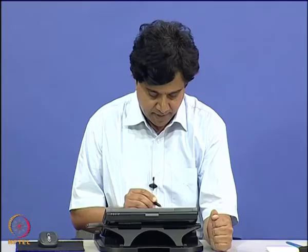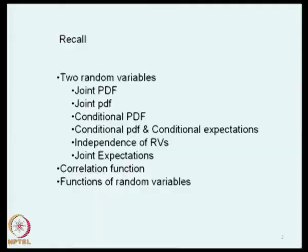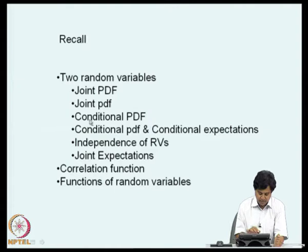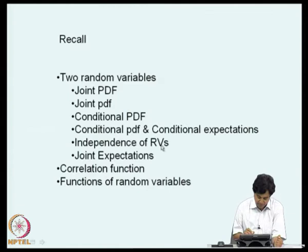In this lecture, we will continue with discussion on two-dimensional random variables. Before that, we will quickly recall what was discussed in the last lecture. We discussed the description of two random variables in terms of their joint probability distribution function and joint probability density function. We extended the notion of conditional probability to the case of two random variables, leading to definitions of conditional probability density function, distribution function, and expectations. This also helped us define independence of two random variables.